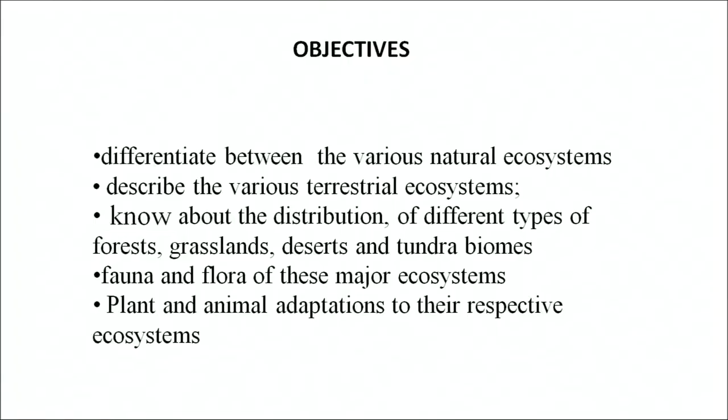The objectives of today's program are that after learning this, you can differentiate between various natural ecosystems, describe the various terrestrial ecosystems, know about the distribution of different types of forests, grasslands and tundra biomes, their fauna and flora, and the adaptation of plants and animals to their respective ecosystems.